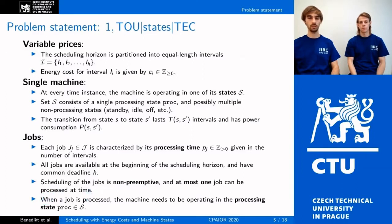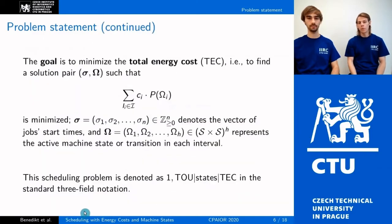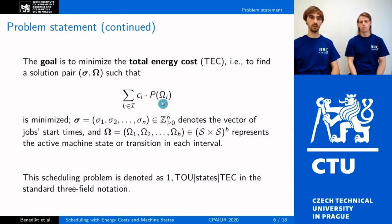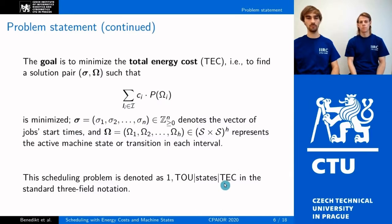All jobs must be processed while the machine is in the processing state. The objective is to minimize the total energy consumption cost during the whole scheduling horizon, computed from the cost of the states in which the machine operates and the transitions between them. The solution consists of the job start times as well as the transition behavior of the machine. This scheduling problem is denoted in the standard three-field notation.